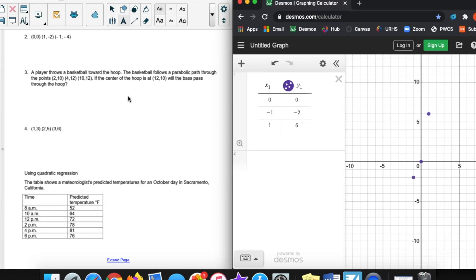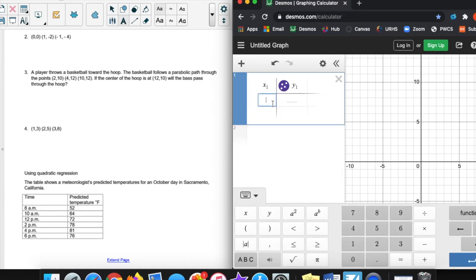Number 3 says, a player throws a basketball toward the hoop, notice doesn't shoot it, so this person's probably not very good at basketball, just chucks it up there. The basketball follows a parabolic path through the points (2,10), (4,12), and (10,12). If the center of the hoop is at (12,10), will the ball pass through the hoop? Same scenario, we're given three points. We need to go plus table, and we are going to type those three ordered pairs into the table. So (2,10), (4,12), and (10,12).